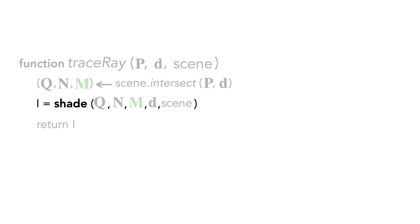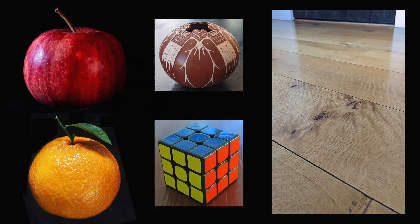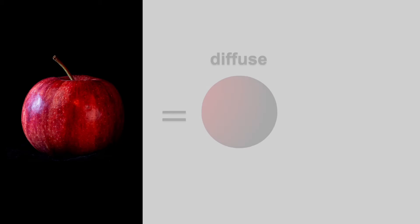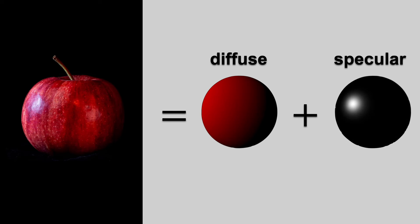So what does the shade function do? Let's dig into it. Many materials in the real world have a mix of diffuse and specular reflection. This apple, for example, can be approximated as a diffuse red sphere, plus a black sphere with a white specular highlight.